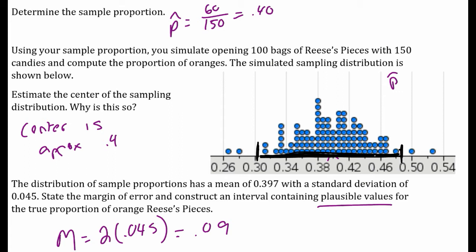Any number between 0.307 and 0.487 could have been a plausible true population proportion that would produce a sample of 40%. Any of those could have been the true population proportion that gave me that sample of 40%.